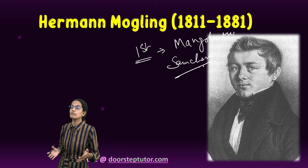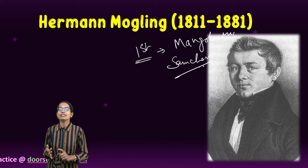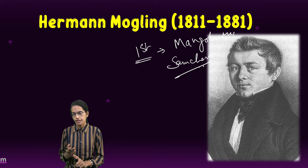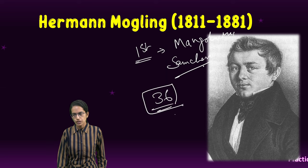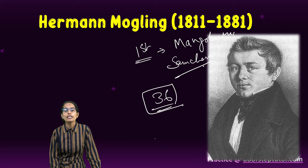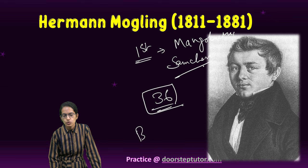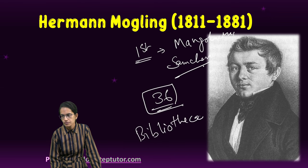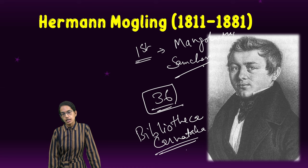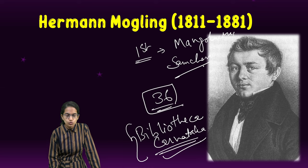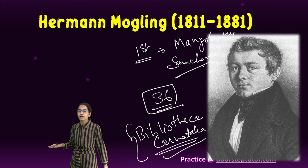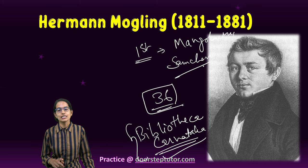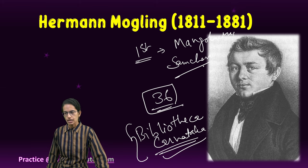He is recognized as the first modern Kannada writer in India, originally a German missionary who came to India. Thirty-six literary works have been attributed to him. He was awarded a doctorate for a literary work in Kannada known as Bibliotheca Karnataka, which was a collection of Karnataka classics. These three lesser-known figures have played an important role in Indian history in the context of reform movements.